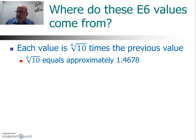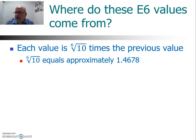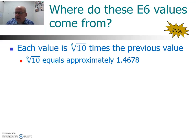Next is E6, which illustrates the pattern that the E value corresponds to the root — E6 uses the 6th root of 10, which equals approximately 1.4678. This is the 20% resistor series. These are becoming less common — you'll see them in older equipment occasionally, but they are being used less and less often.